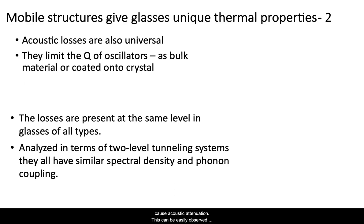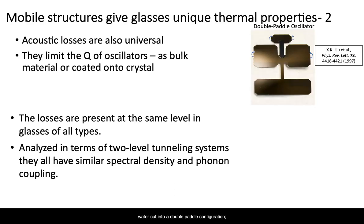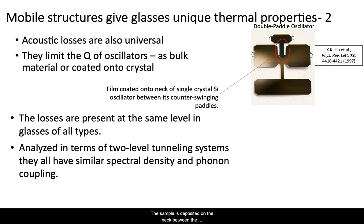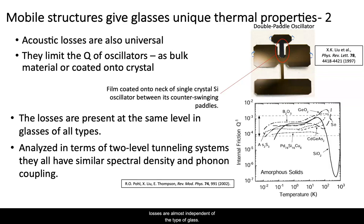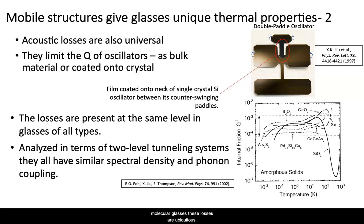These mobile structures also cause acoustic attenuation, which can be easily observed when glasses are used as components in oscillators. Films are often measured by depositing onto a single crystalline silicon wafer cut into a double paddle configuration. The sample is deposited on the neck between the counter-swing paddles, where it can be torqued. It is remarkable that the losses measured this way are almost independent of the type of glass — oxides, chalcogenides, metallic. Looking at a wider range including polymers and molecular glasses, these losses are ubiquitous and similar in all, both in their spectral density and in their coupling to phonons. People care about them: these glassy states limit the sensitivity of LIGO and its cousins — gravity wave detectors — and they compromise the reliability of quantum computing schemes.